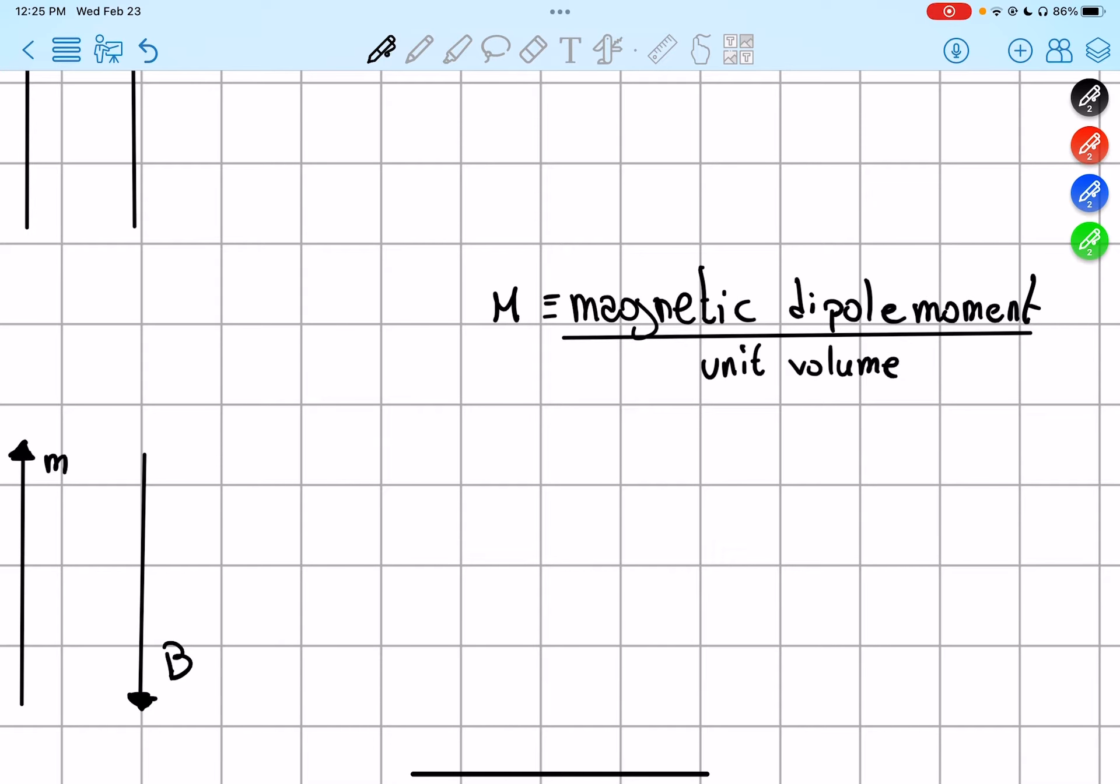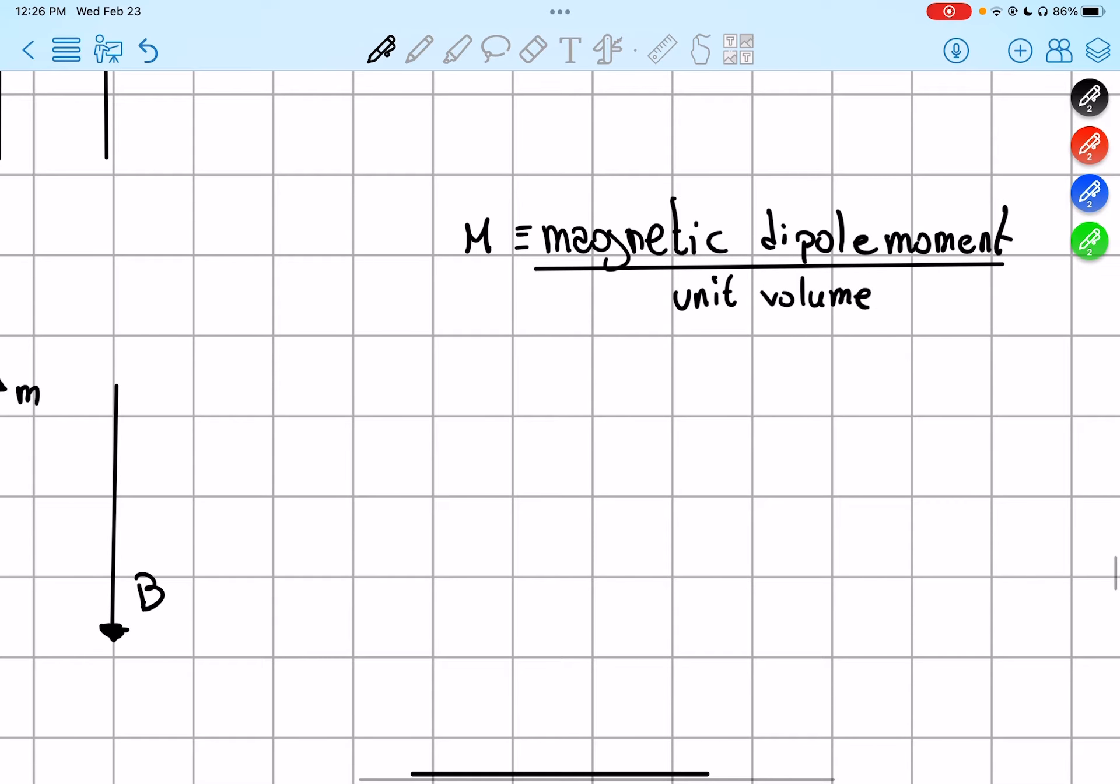And this becomes actually very helpful in finding some field in the future. As I said, it's not very difficult to understand. You can think about this as the polarization we find in previous chapters.